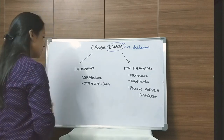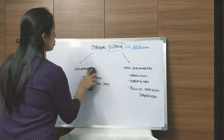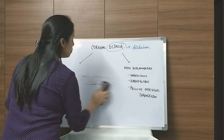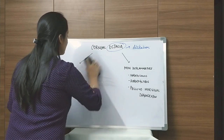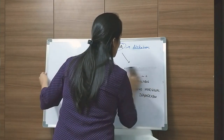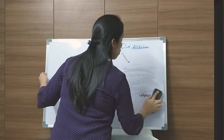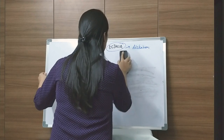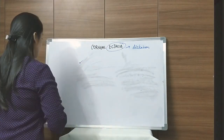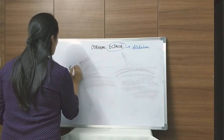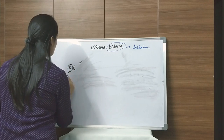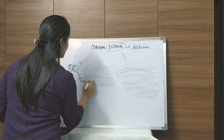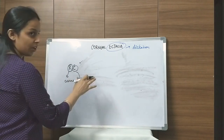First I will be discussing keratoconus. Keratoconus is clinically, as well as from your MCQ point of view, the most important of all of them. As the word itself suggests — 'kerato' means cornea and 'conus' means conical — so basically it is a conical cornea.